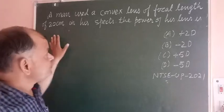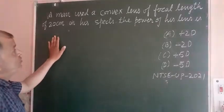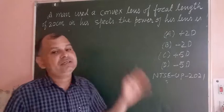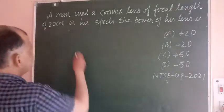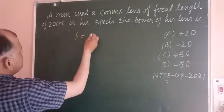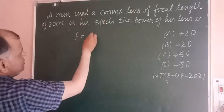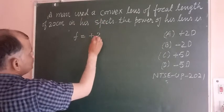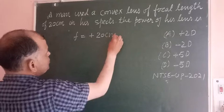So students, here the focal length of lens which is used in his spectacles is given. So f is given to us which is a convex lens, so f equals plus 20 cm. We change it to meters.